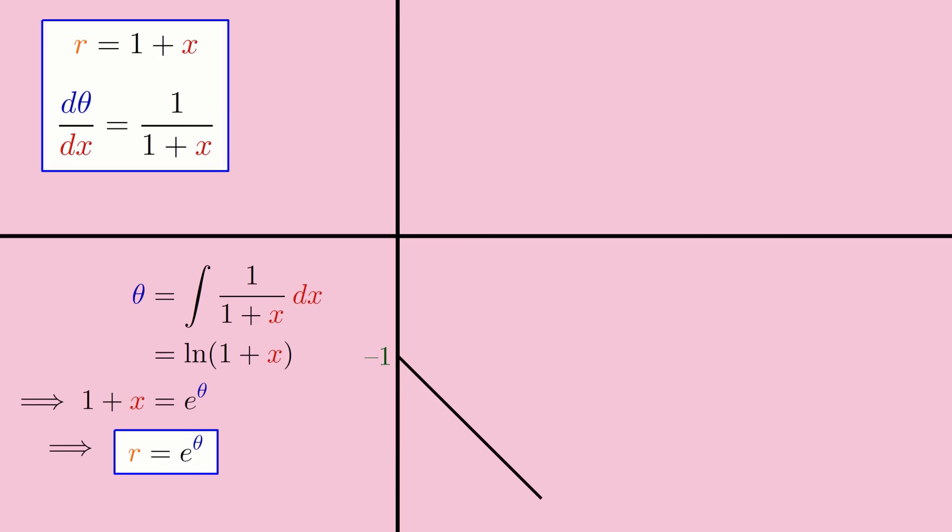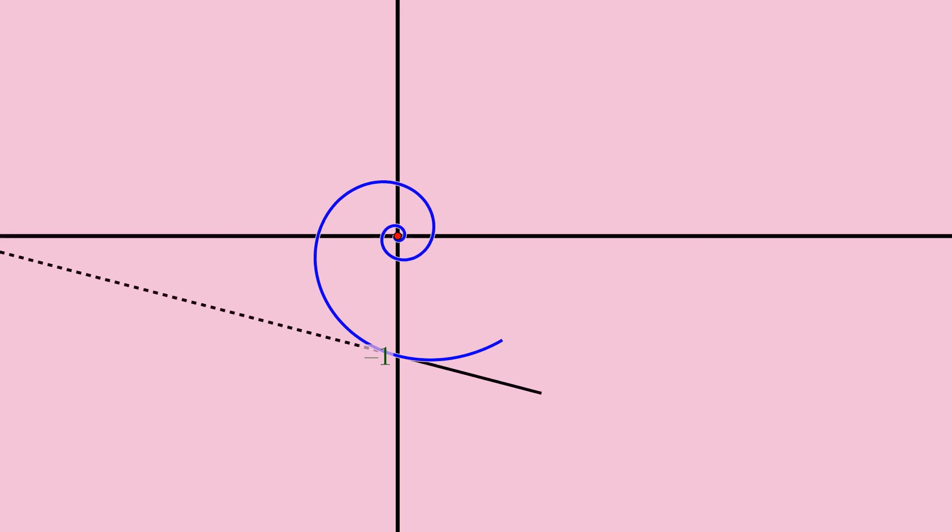Chugging through the algebra and calculus to solve these equations, you'll find that the wheel for a slanted linear road is described by the polar equation r equals e to the theta, whose graph is known as a logarithmic spiral, the same kind of spiral you can find in seashells or galaxies. If you change the slope of the line, you'll get the same spiral, just twisting at a different speed.